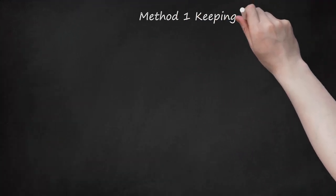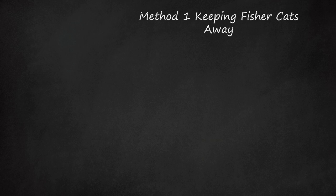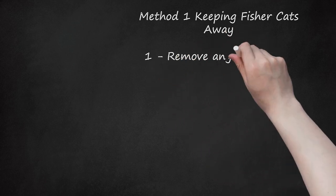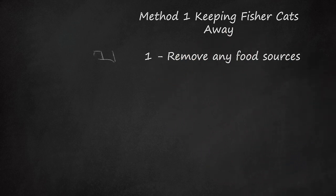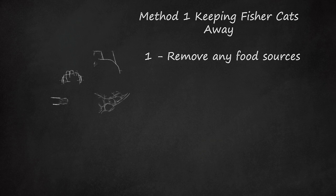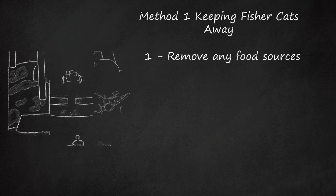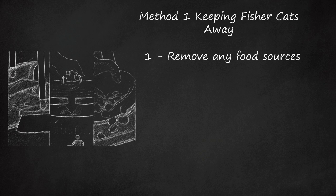Method 1: Keeping Fisher cats away. Step 1: Remove any food sources. One of the best approaches to keeping fisher cats at bay is to remove food that will draw them to your property. Fisher cats are predators that will be drawn by food sources if you leave them in your yard.